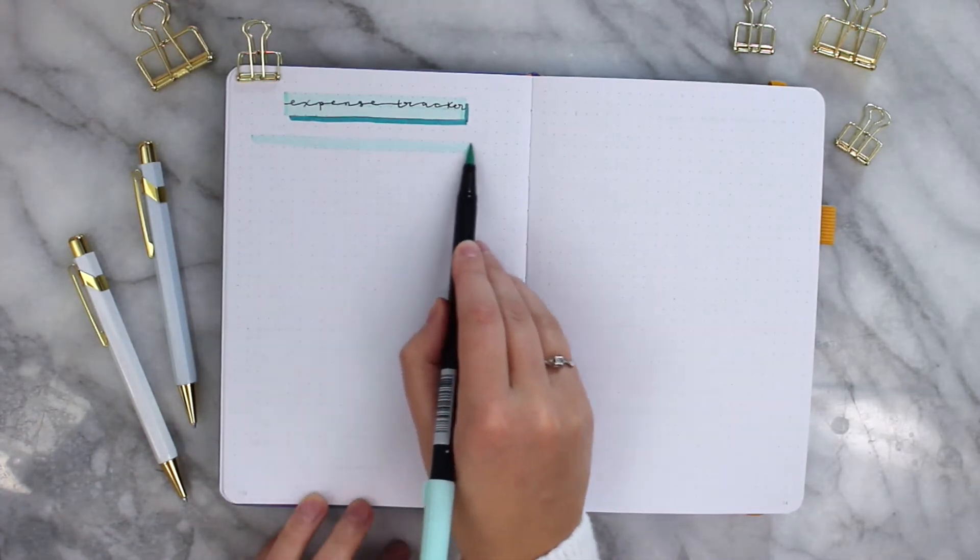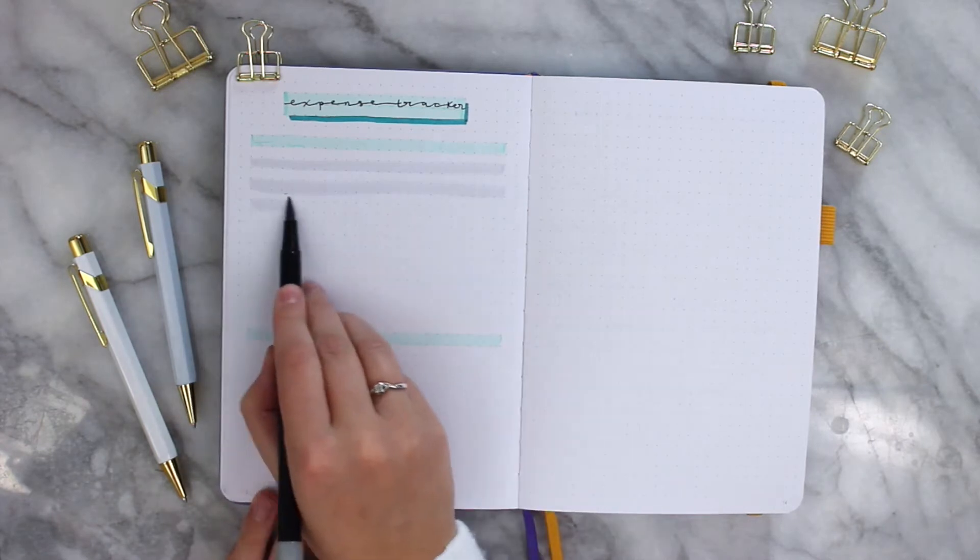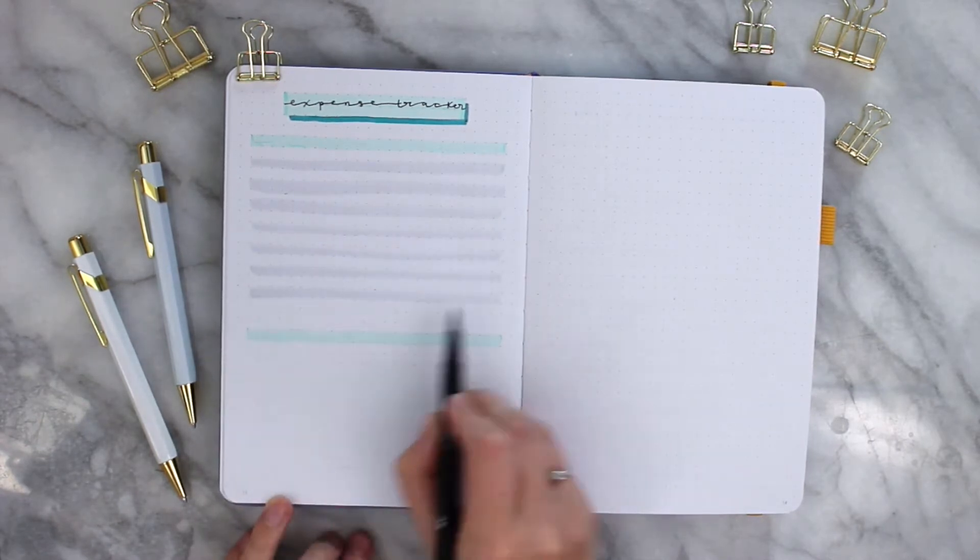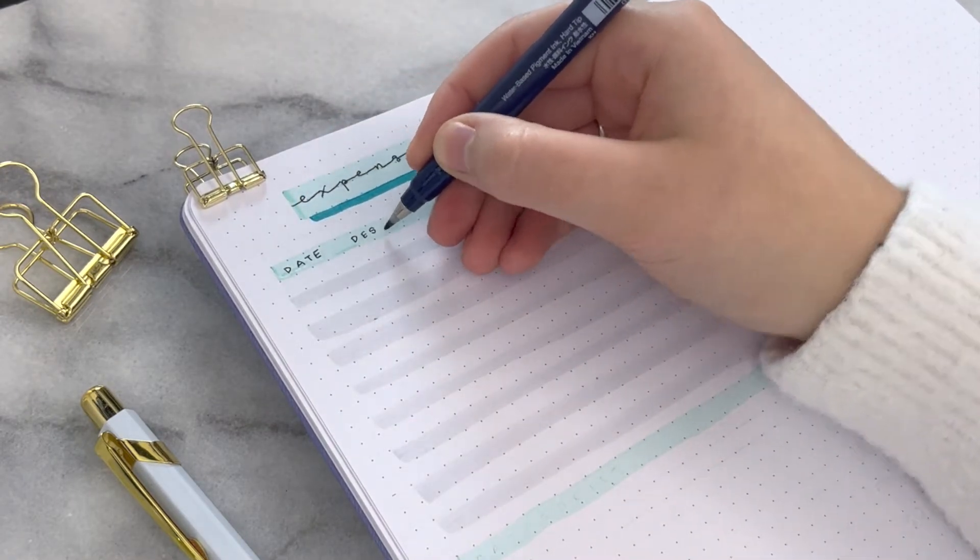One thing about expense tracking is it's going to give you a better representation of what's going on in your money journey, where you're spending your money, but it also is going to help ensure that no mistakes are being made in your account.